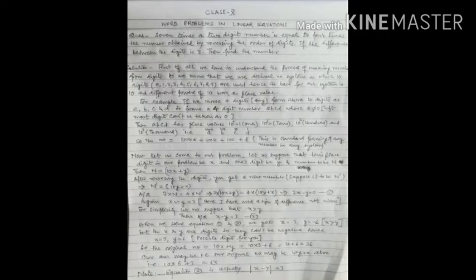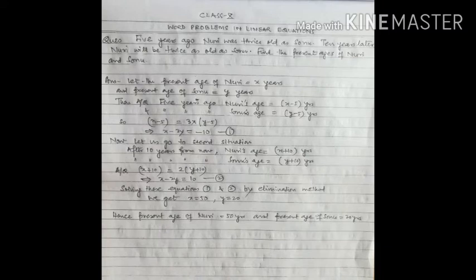An important point to note is that the second equation is mathematically written as |x − y| = 3 using modulus notation, which you will study in higher mathematics. So our answer is obtained. Now one more problem from the assignment work: five years ago, Noori was thrice as old as Sonu. Ten years later, Noori will be twice as old as Sonu. Find the present ages of Noori and Sonu.